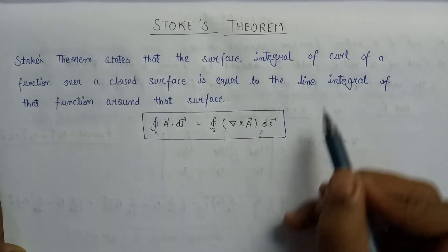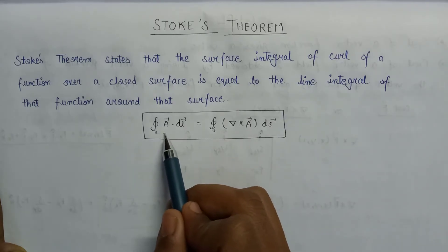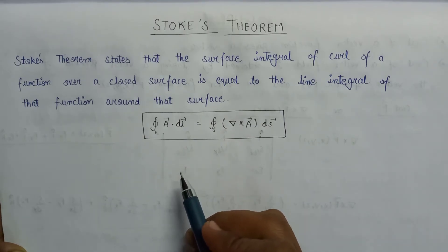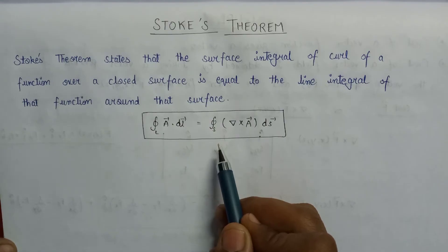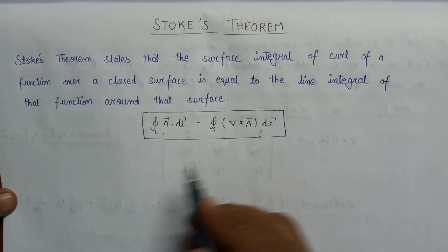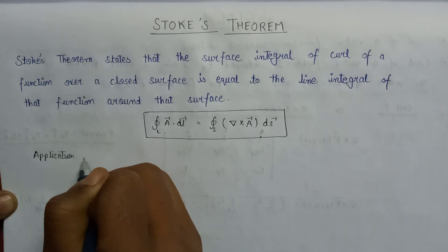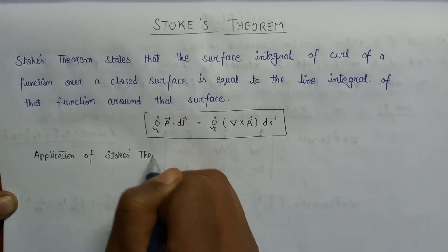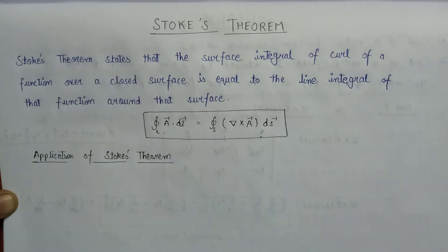The surface integral of a curl of a function over a closed surface S is equal to the line integral of a function over that surface. The Stokes theorem has a basic application of the conversion of line integral into surface integral. The Stokes theorem provides a relationship between line integral and surface integral.